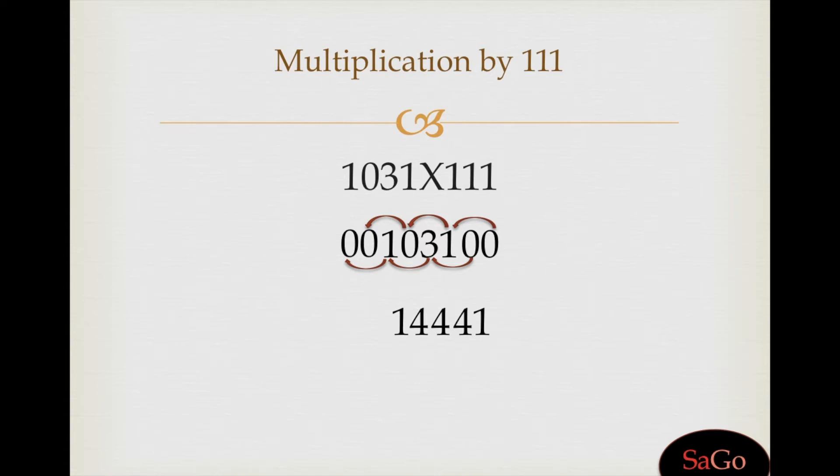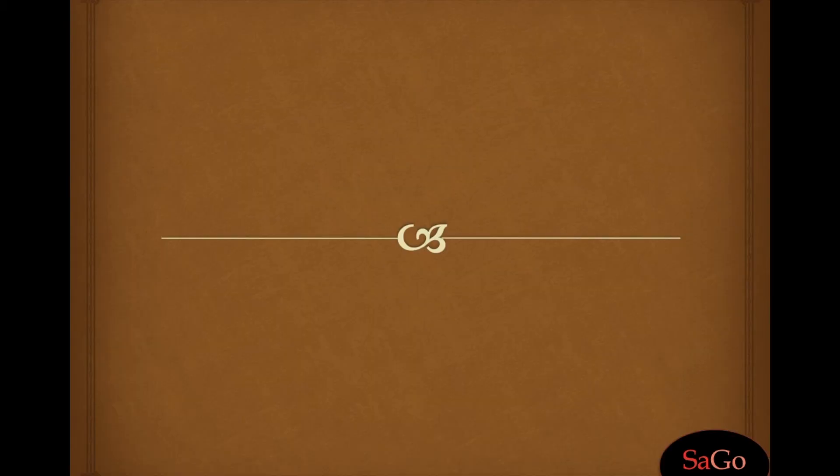Zero plus one plus zero is one, write one. And one plus zero plus zero is one, write one. Our answer is 114441.